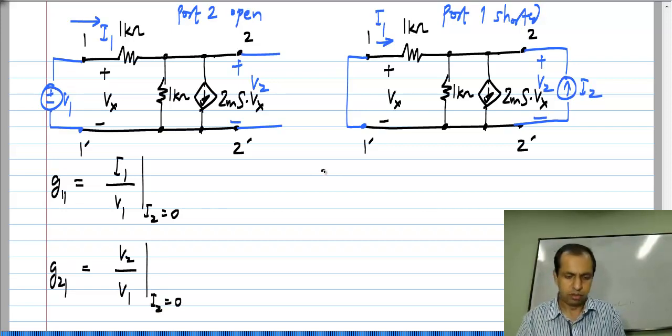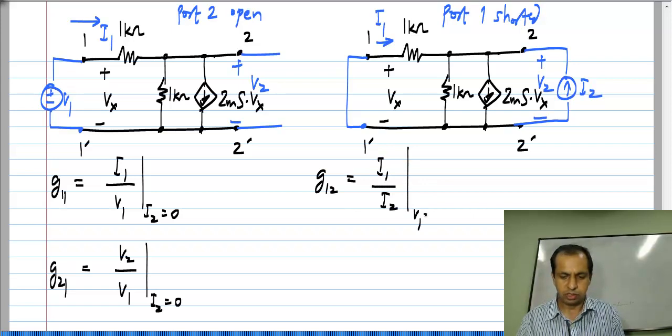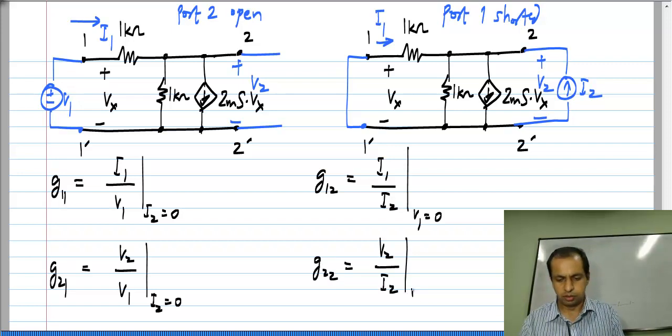Similarly, G12 I get from the second setup which is I1 by I2 with port 1 shorted, and similarly G22 is V2 by I2 with port 1 shorted.